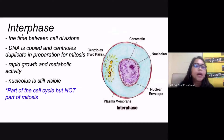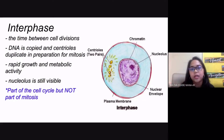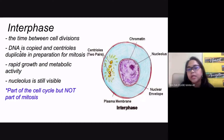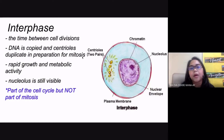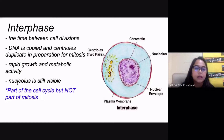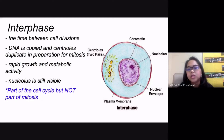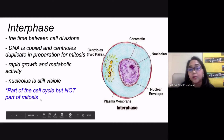Interphase is the longest stage and is the time between cell divisions. The cell is not dividing but is still very busy. DNA is copied and chromosomes are duplicated during the S phase. Centrioles — the macaroni-looking structures inside animal cells — are also duplicated in preparation for mitosis. There is rapid growth and many metabolic activities. The nucleolus is still visible during interphase. Importantly, interphase is not part of mitosis.